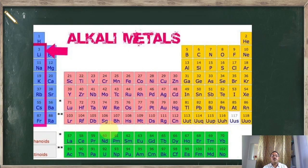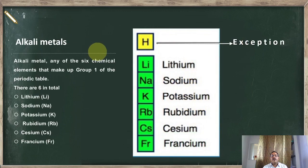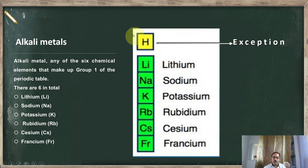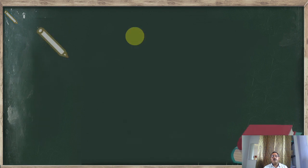Alkali metals form the first group in the periodic table. Hydrogen is the exception; the remaining elements are: Li (lithium), Na (sodium), K (potassium), Rb (rubidium), Cs (cesium), and Fr (francium). All these elements belong to the group called alkali metals. We started our unit with hydrogen and now we study the rest of the members, except hydrogen.